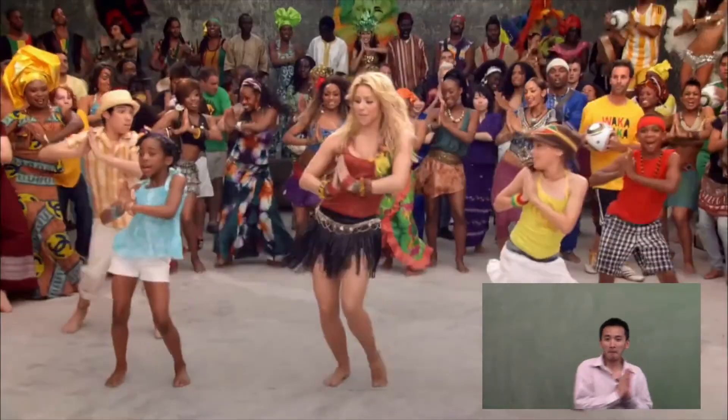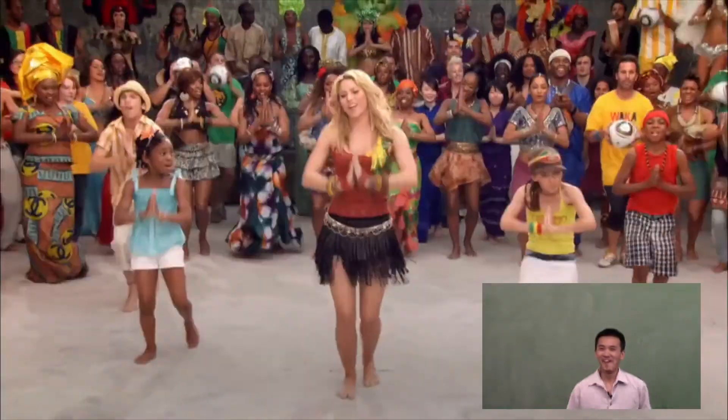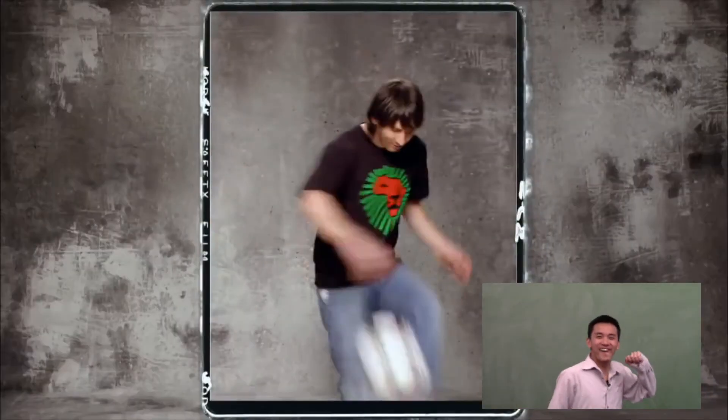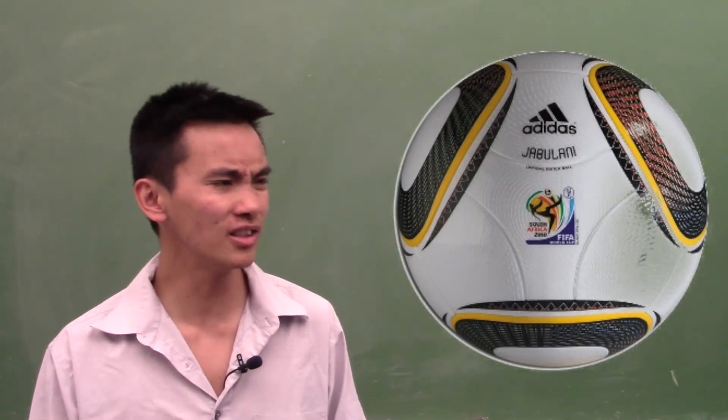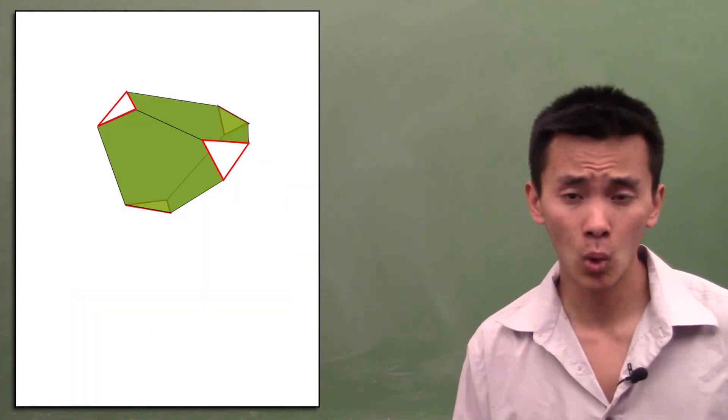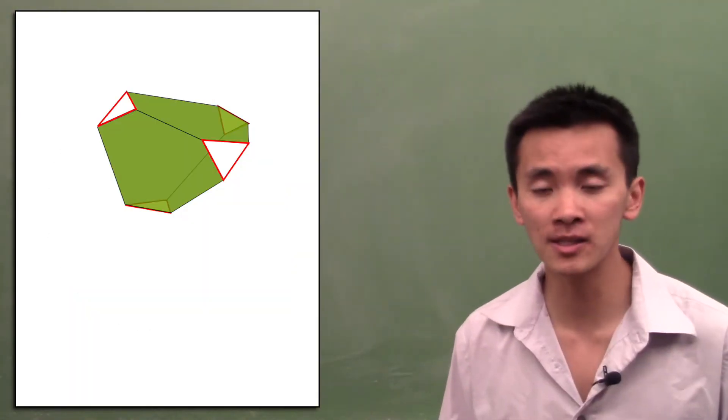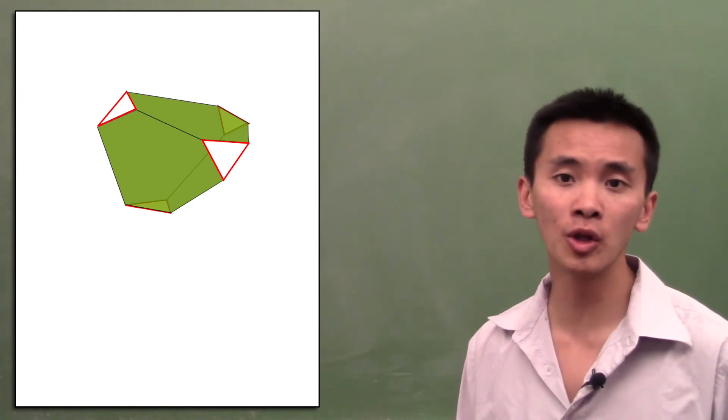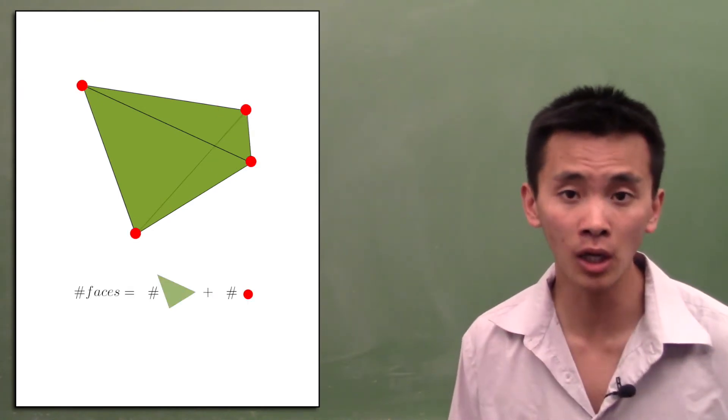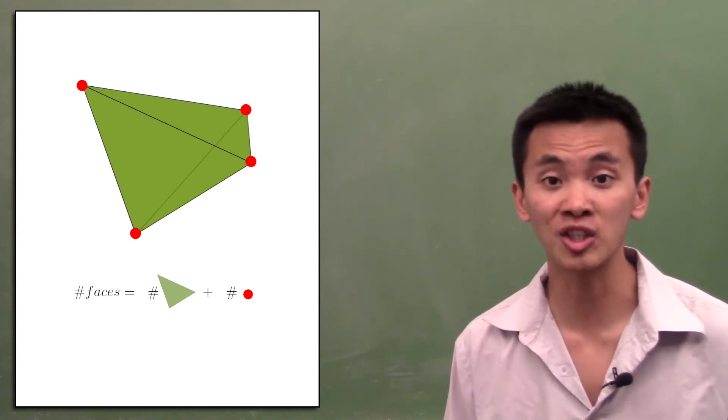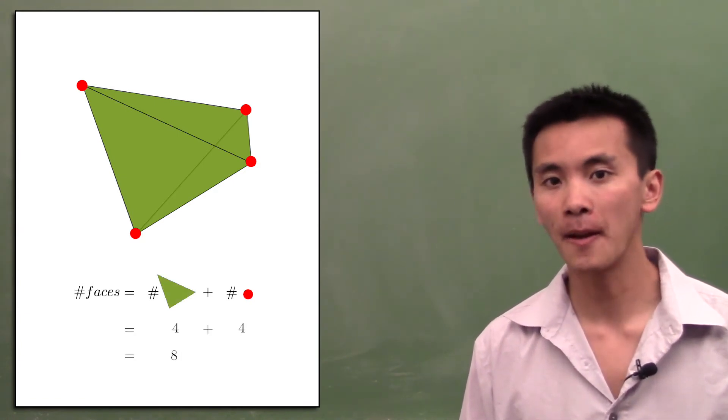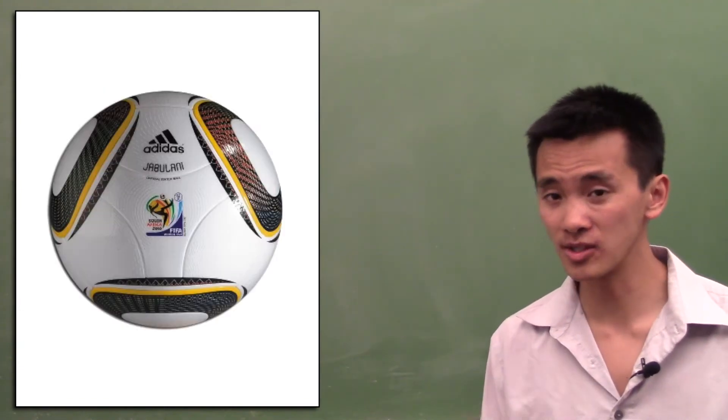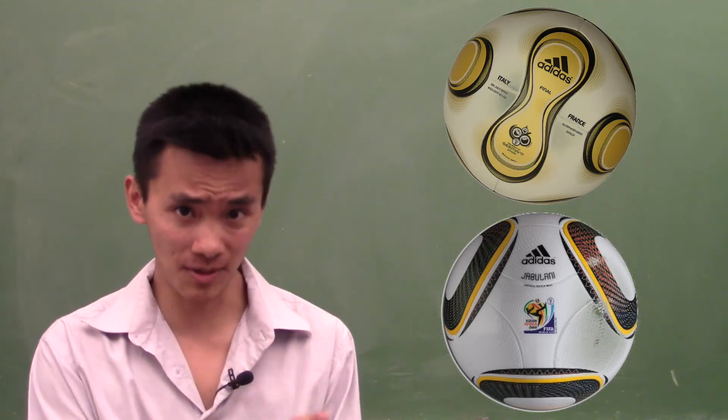Next, in 2010, Adidas introduced the Jabulani. This ball is a truncated tetrahedron, which means that the number of faces that it's going to be made of is going to be the number of faces of a tetrahedron plus the number of corners of a tetrahedron. That's 4 plus 4, which makes up 8 panels.